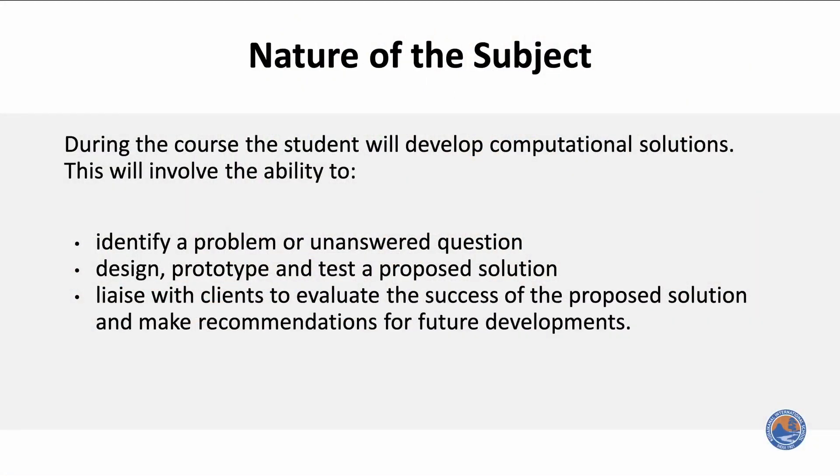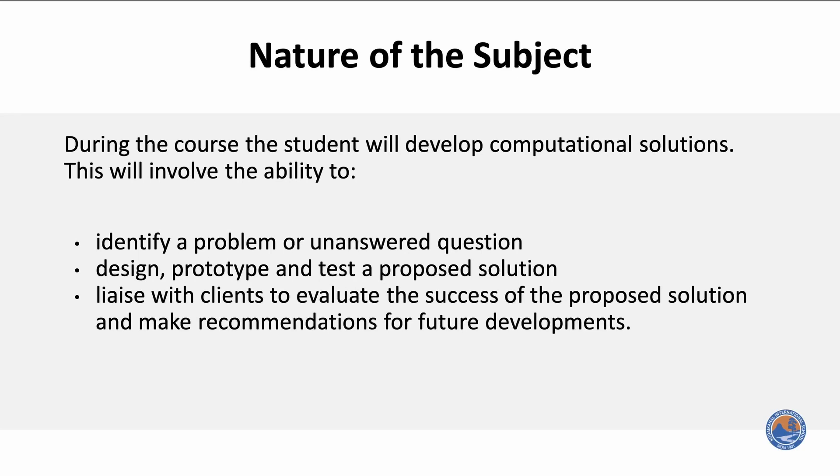Computer Science is a Group 4 subject. It's an experimental science, and it's offered with other science subjects. Computer Science is offered both at a higher level and standard level. In this subject, students study the design, development, and analysis of software and hardware used to solve problems in various business, scientific, and social contexts. This course is recommended for students who enjoy programming and problem-solving, which are the main elements of the course.